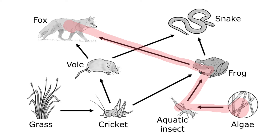We can find our other food chain the same way — starting at the producer and following it through to the cricket, to the vole, to the snake. By putting these together into a food web and showing all of the interactions in this ecosystem, we get a better picture of what's going on.